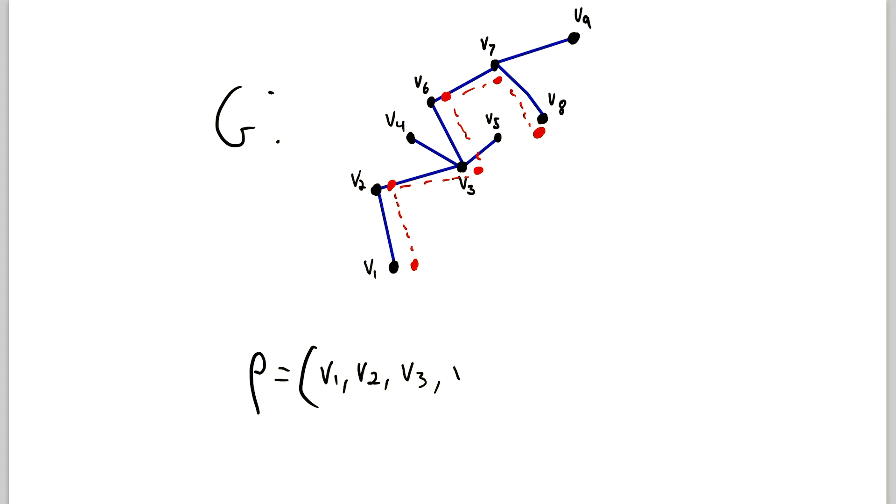Then we went to V3. Then we went to V6. Then to V7. And then we finished at V8. That is where we came to a stop. So this sequence of vertices in the graph G defines our path.